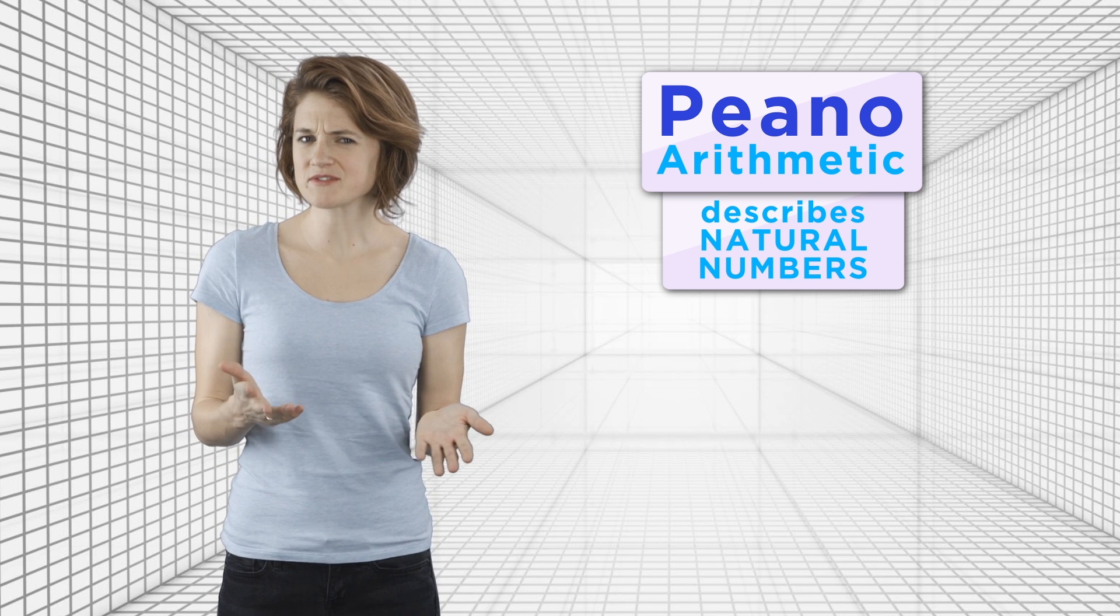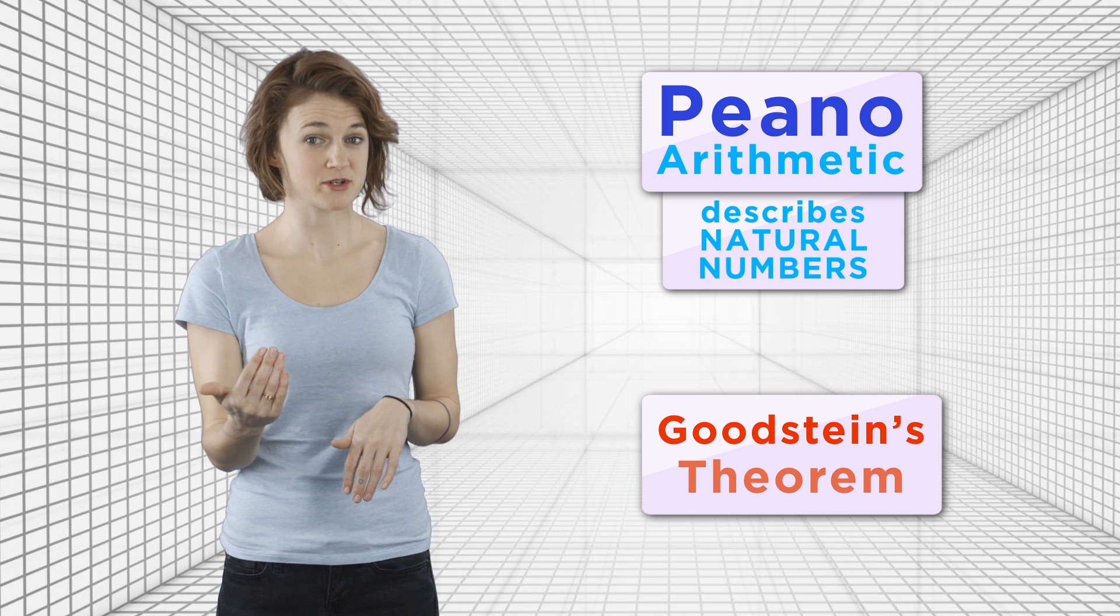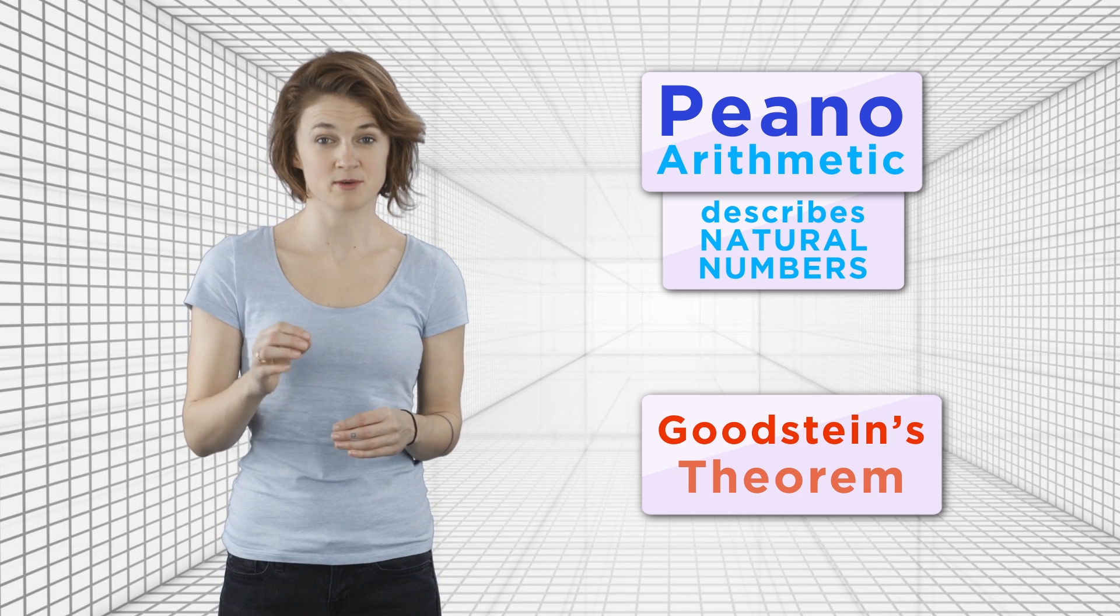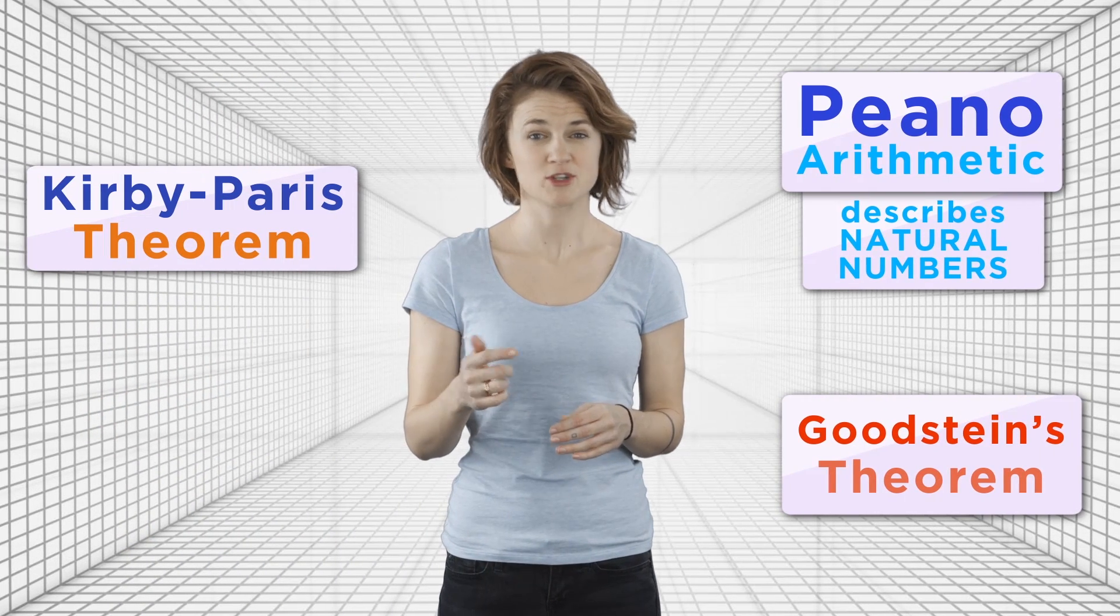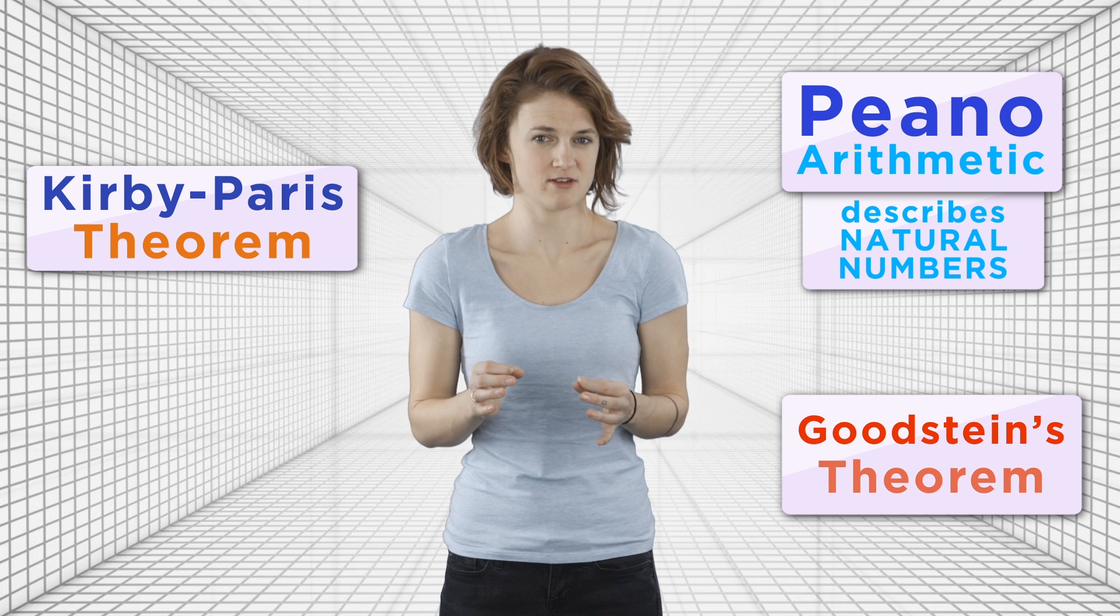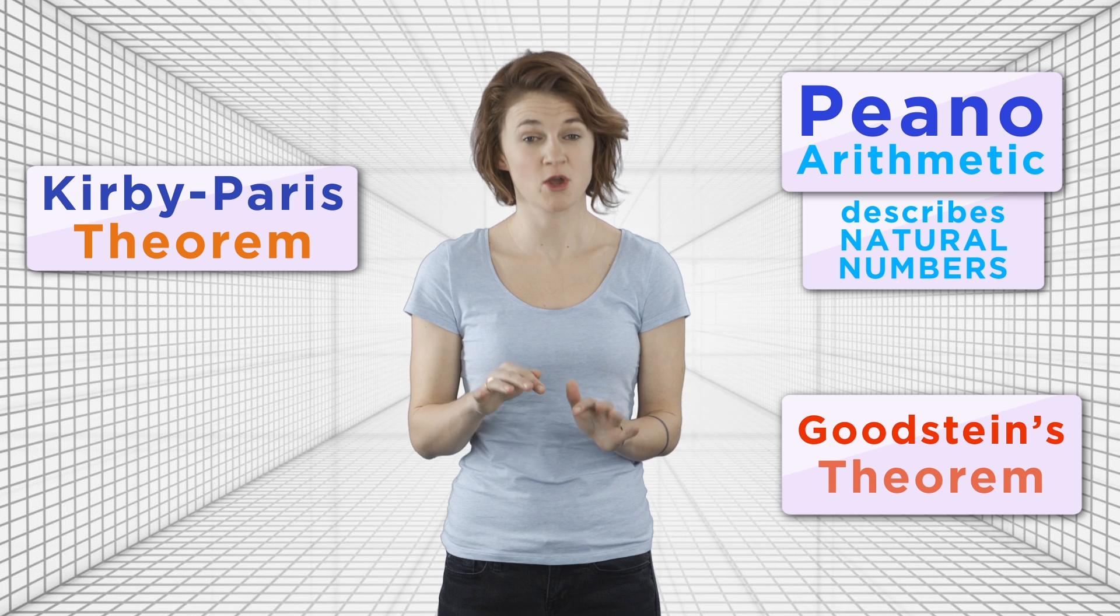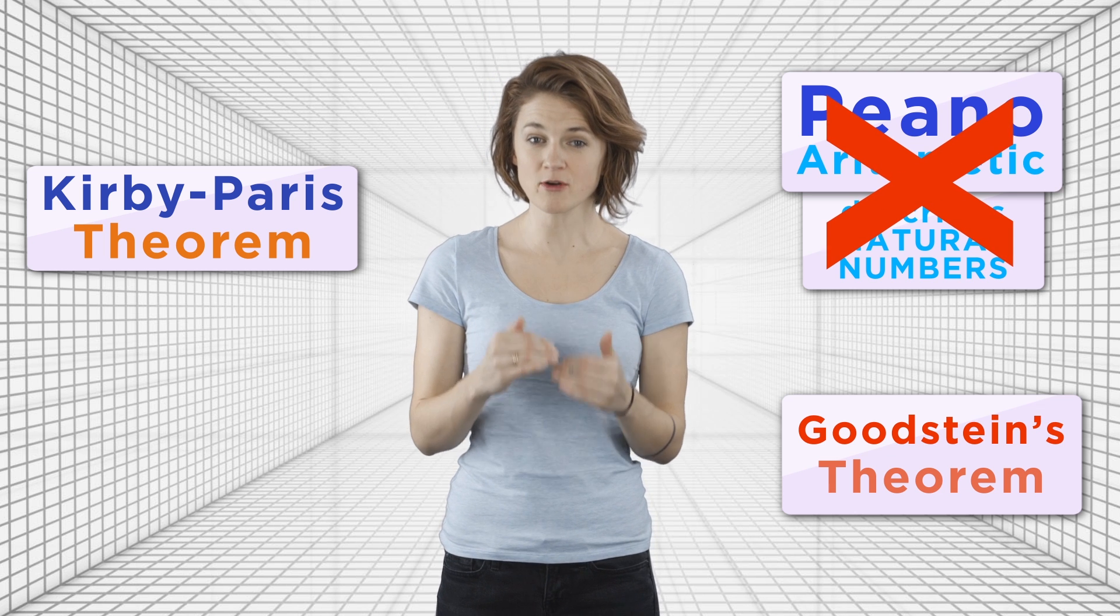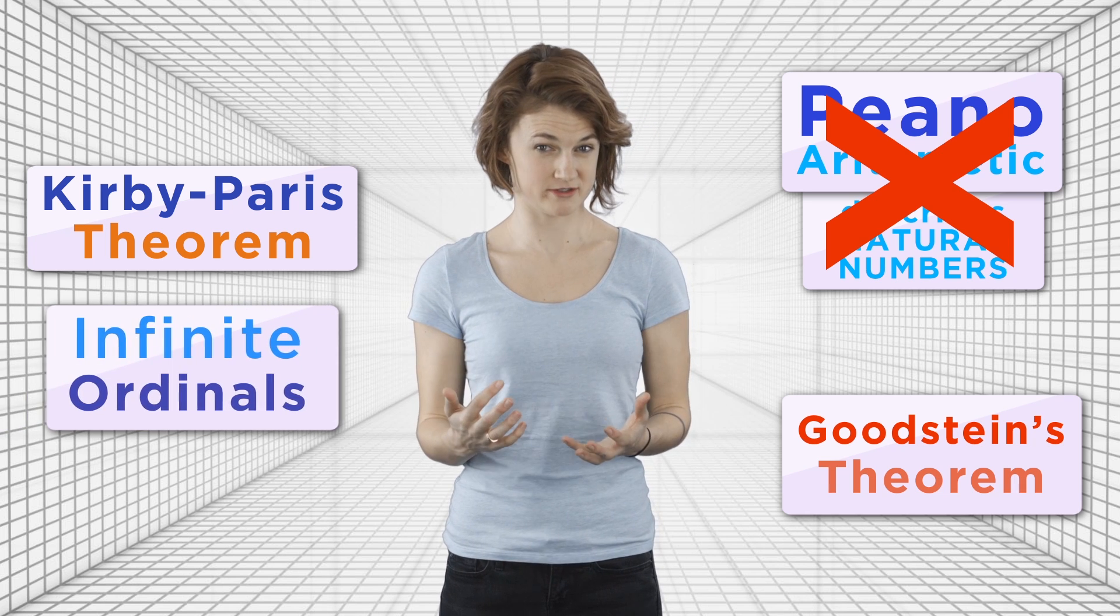And it sort of seems like Goodstein's theorem, which is only about natural numbers, should also be provable in Peano arithmetic. But the Kirby-Paris theorem shows that it's not. The incredibly surprising thing about this theorem is that in order to prove something about finite numbers, we had to move out of the domain of Peano arithmetic and into the world of infinite ordinals.